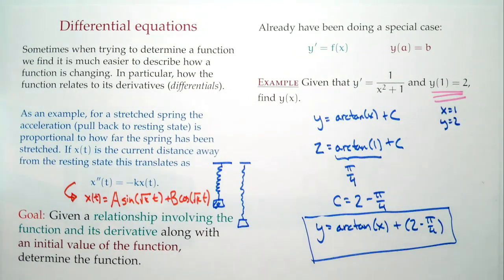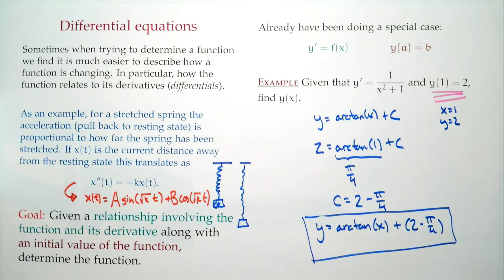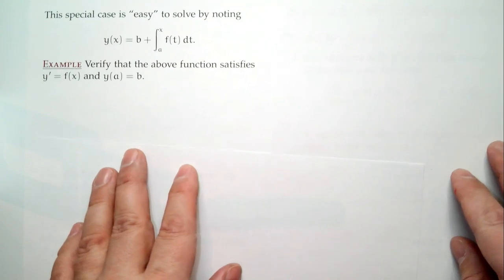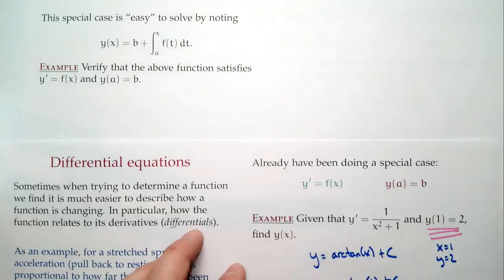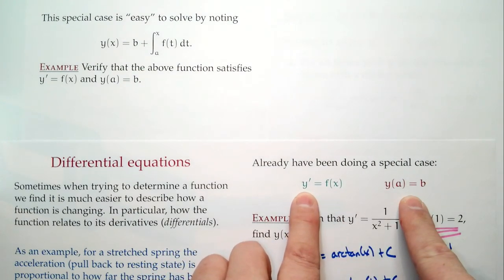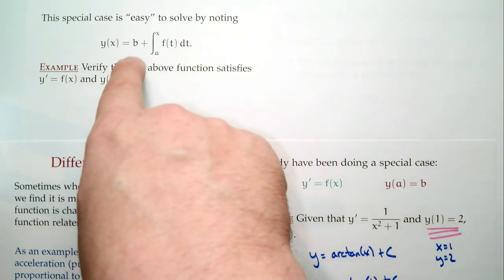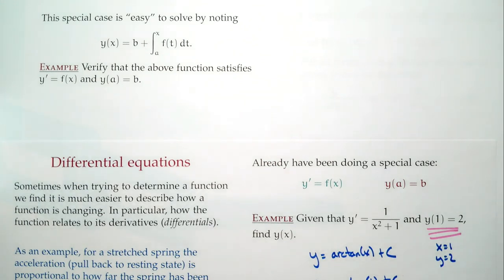Every time you take an antiderivative you get a +c, so you need one piece of information to pin down which c to use. In general, if y' = f(x) and y(a) = b, then the solution is y(x) = b + ∫ from a to x of f(t) dt. That's guaranteed to work. To verify: y(a) = b + ∫ from a to a of f(t) dt = b + 0 = b. And y'(x) = f(x) by the Fundamental Theorem.